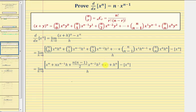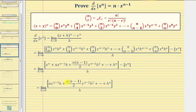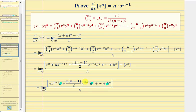Now we want to begin simplifying. Notice here we have x to the nth minus x to the nth, so these two terms simplify out, giving us the limit as h approaches zero of this fraction. Looking at the numerator, notice how all of the terms contain at least one factor of h, so for the next step we'll factor one factor of h out of the numerator.